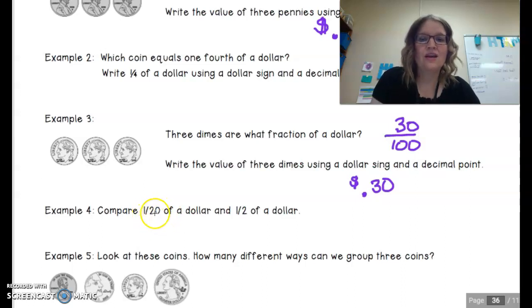Now they want us to think about what is one 20th of a dollar and half of a dollar. We know that there are 20 nickels to every dollar. And so one 20th of a dollar would be five cents out of a hundred, because we know that one nickel is a 20th of a dollar. We know that half a dollar would be 50 cents out of a hundred.